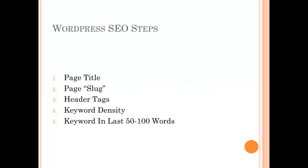There are ten steps for the WordPress SEO process. The first five are: ensure that your keyword is in the page title, it's in the page slug, it's included in header tags, ensure that the keyword density is appropriate, and that you also have the keyword in the last 50 to 100 words.